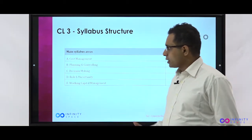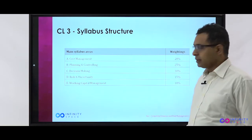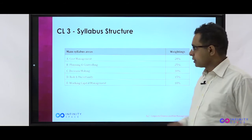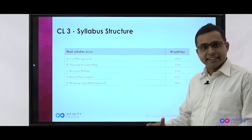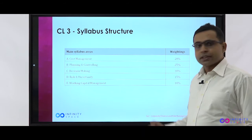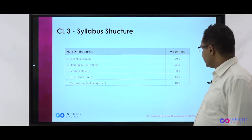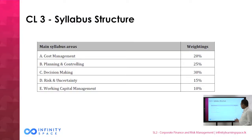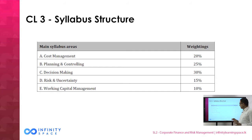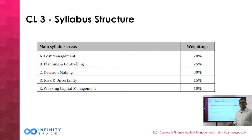The syllabus comprises five major components. As you can see, it includes cost management, which is 20% of the syllabus; planning and controlling, which covers standard costing, budgeting, and related areas; introduction to decision making; risk and uncertainty, carrying 15%; and working capital management, carrying 10%. The core areas are planning and controlling and decision making, where the majority of content is allocated. Yet all five areas are very important, as we'll be looking at your pilot paper and your exam structure.